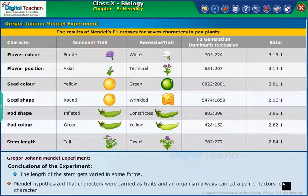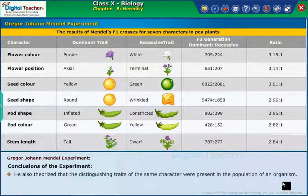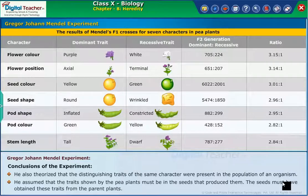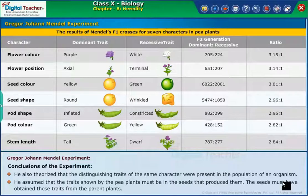Mendel hypothesized that characters were carried as traits and an organism always carried a pair of factors for a character. He also theorized that the distinguishing traits of the same character were present in the population of an organism. He assumed that the traits shown by the pea plant must be in the seeds that produced them, and the seeds must have obtained these traits from the parent plants. Now let us learn how Mendel carried out experiments to find out how parent plants pass on their traits to the seeds.